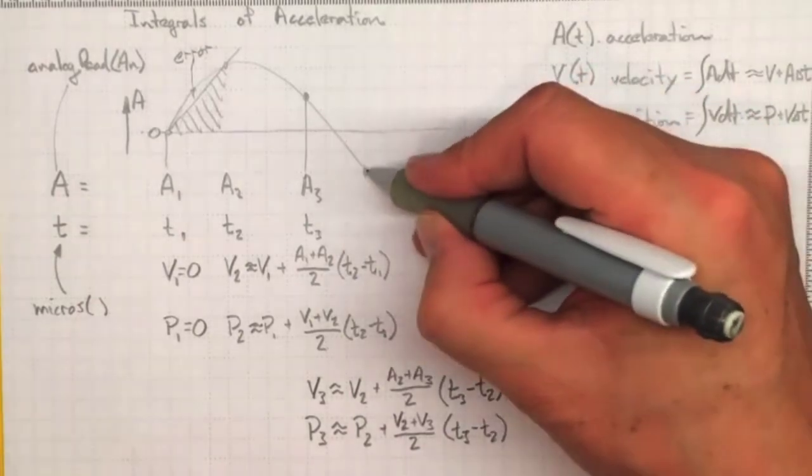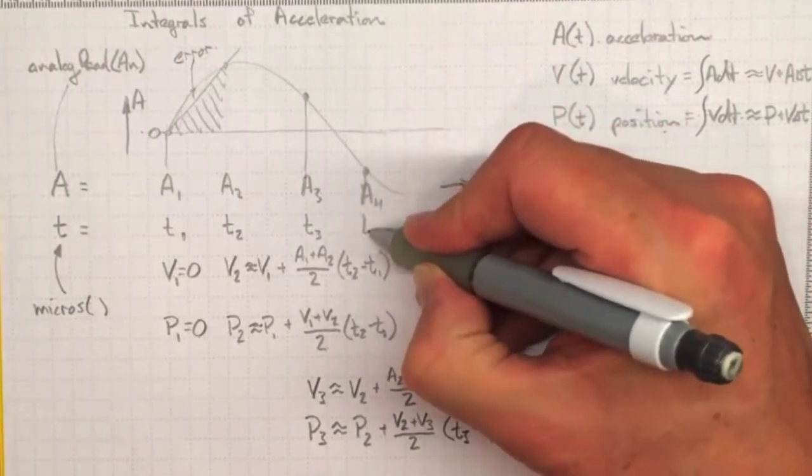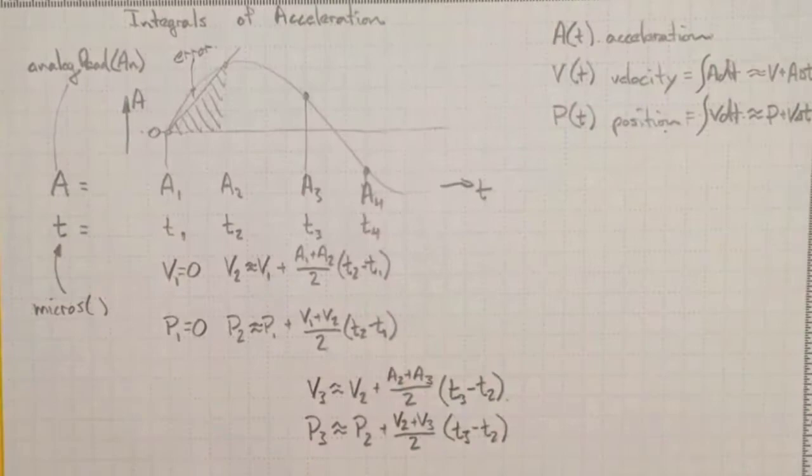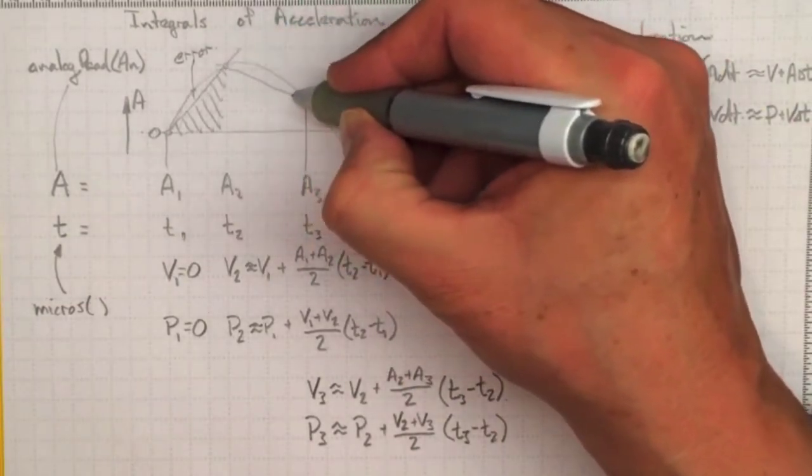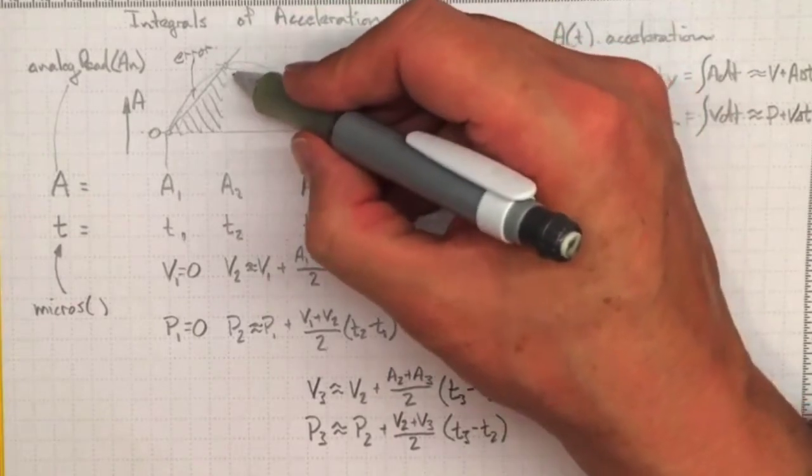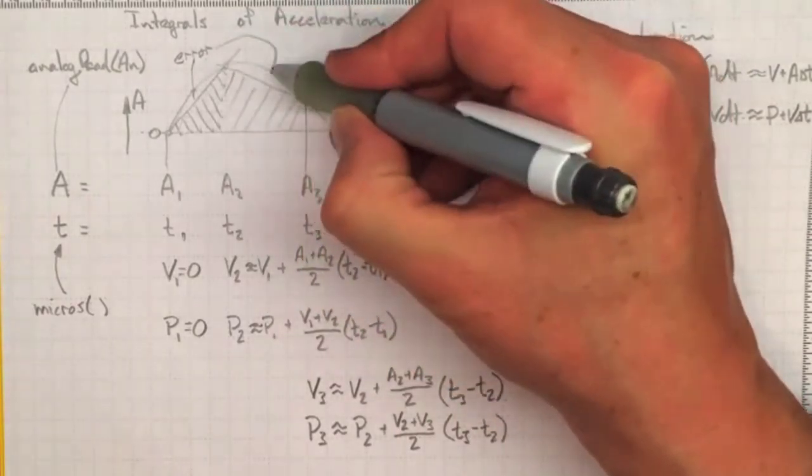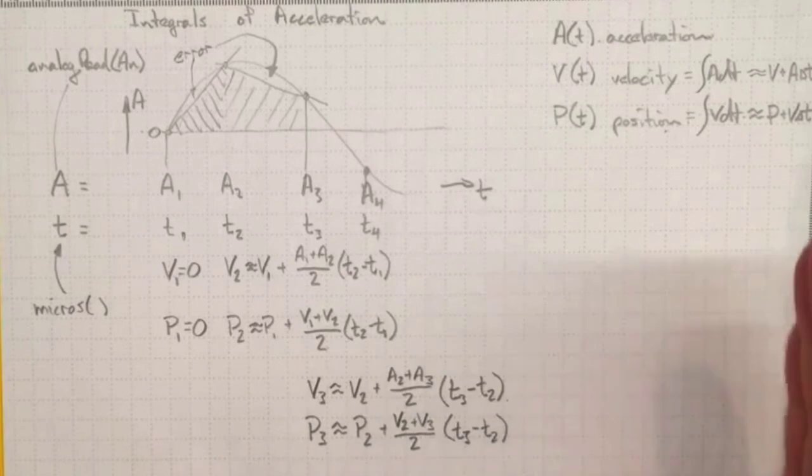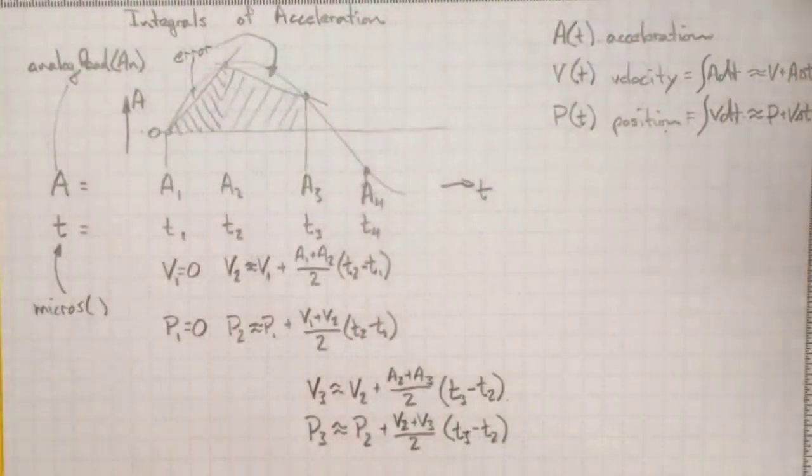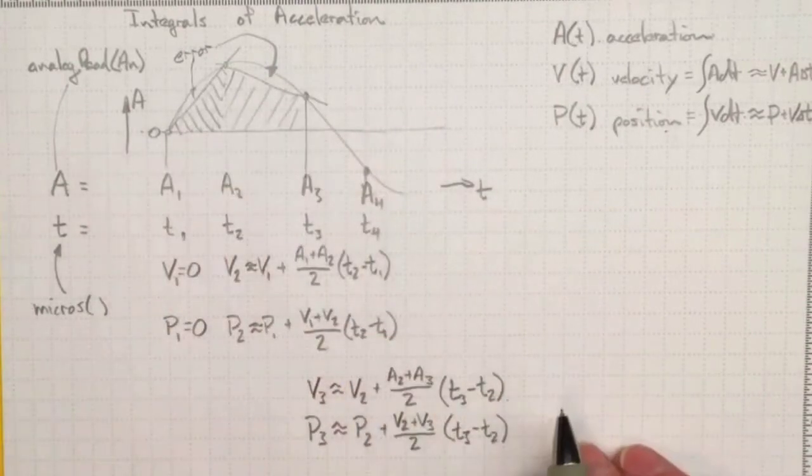And we can repeat that over here with a4 and so on down the line. Now every time we do this we're estimating the area under the curve with this crude estimate and we're getting an error when we don't get our estimate right. But again, if we push those close enough together we can get a pretty good estimate of the area under the curve.